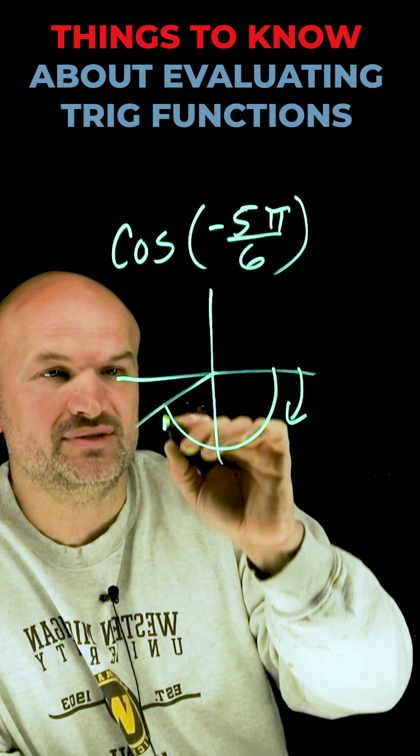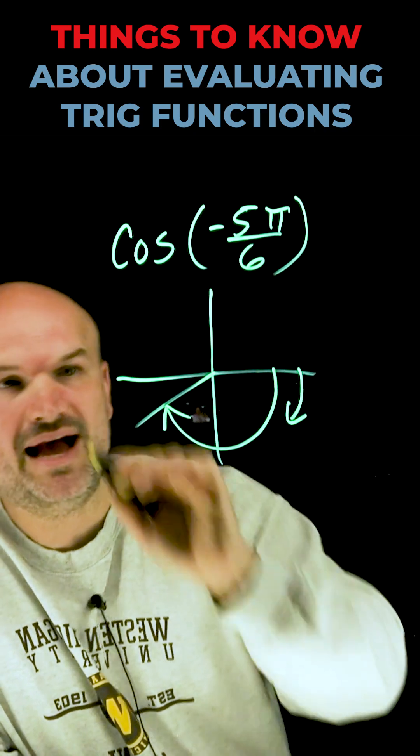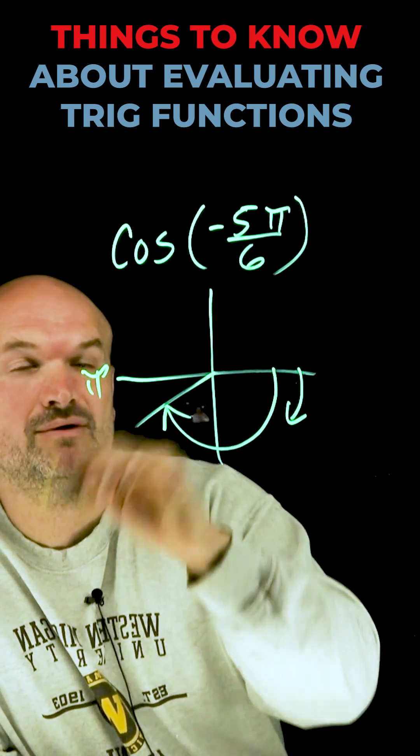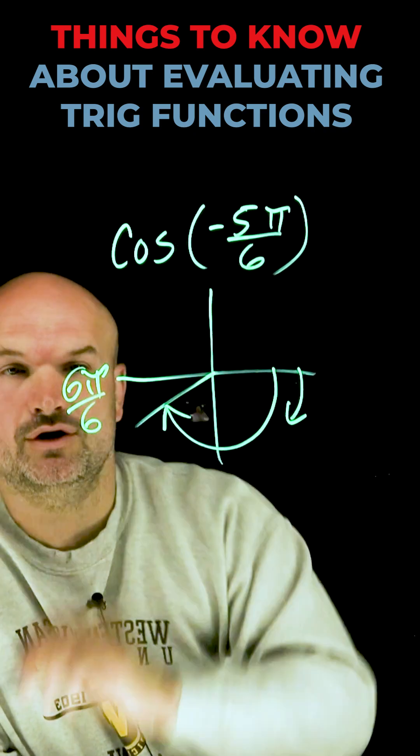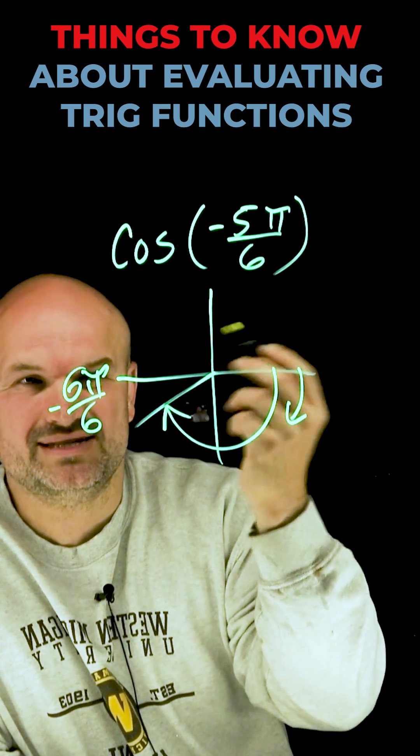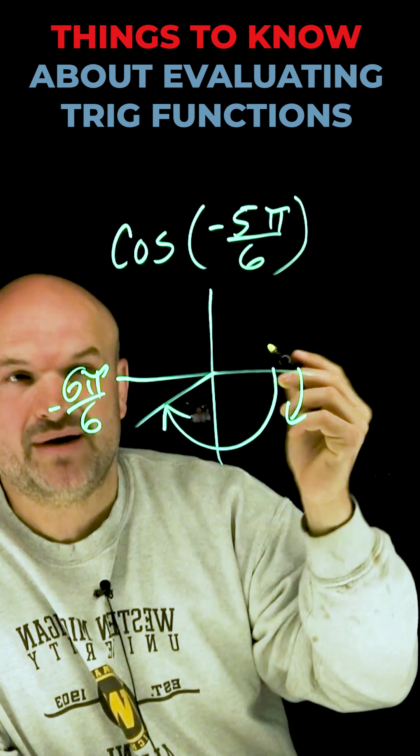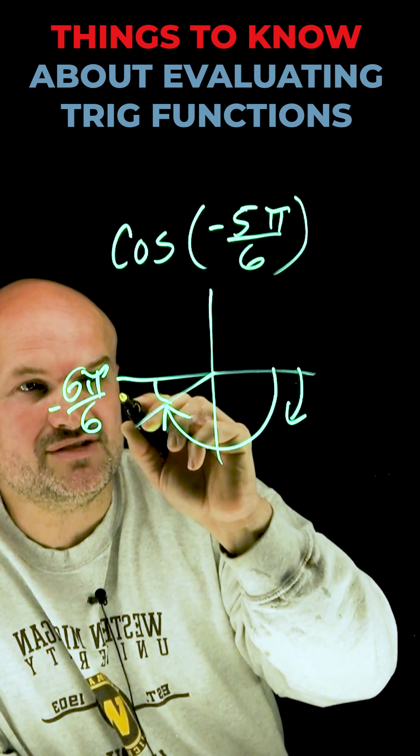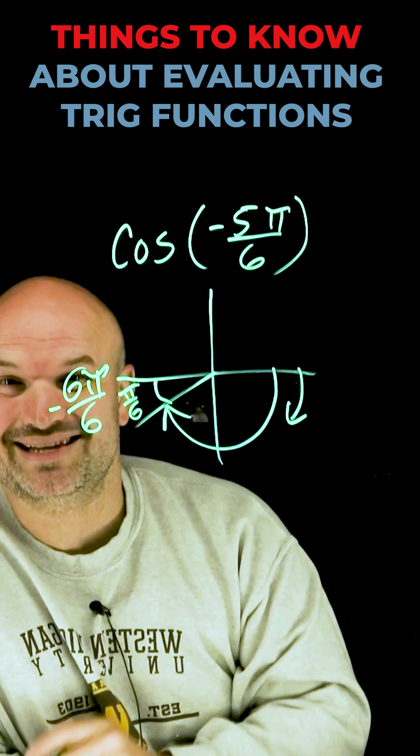Now, why do I know it's going to be somewhere over here? Well, I know halfway around a circle is π, which I can also rewrite as 6π over 6. This is in the negative direction, so you can think about it as negative 6π over 6. So if I have negative 5π over 6, that means this little slice right here is going to be π over 6.